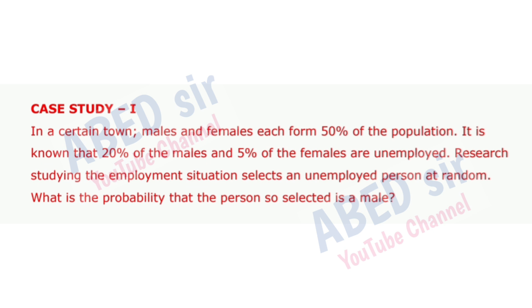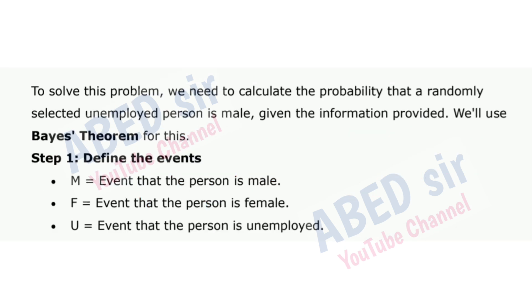In a certain town, males and females each form 50% of the population. It is known that 20% of the males and 5% of the females are unemployed. A researcher studying the employment situation selects an unemployed person at random. What is the probability that the person so selected is a male?